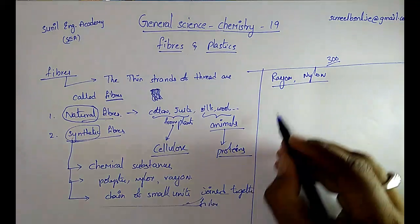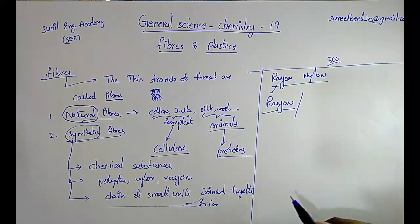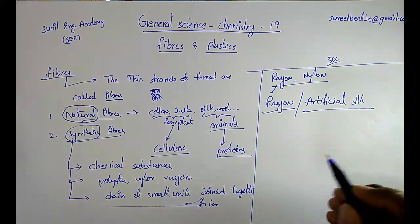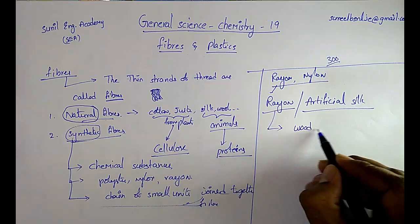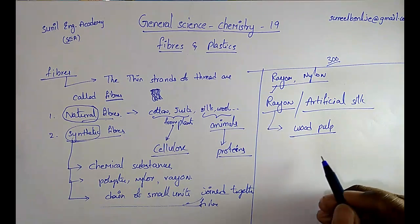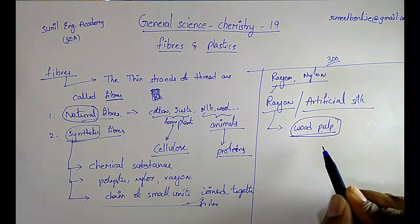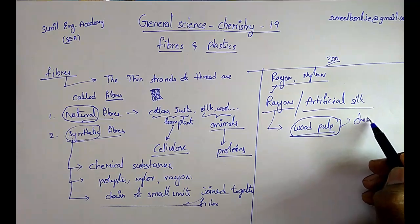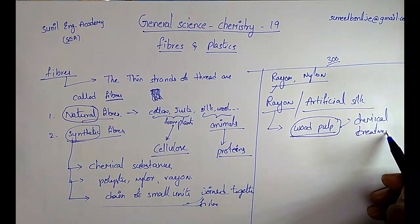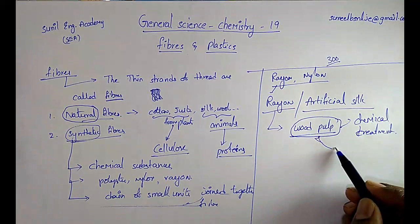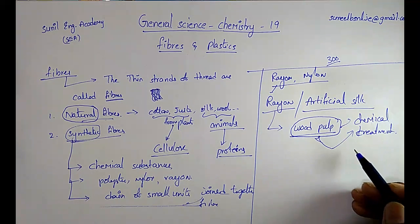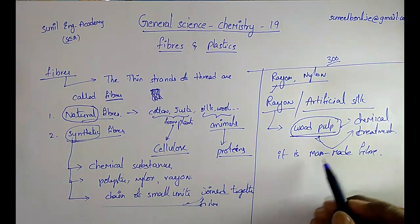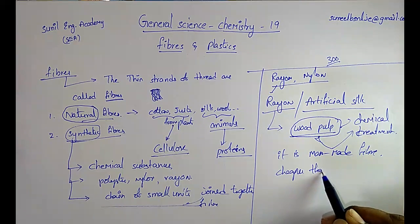The first example of synthetic fiber is rayon. We may also call rayon artificial silk. It is obtained by chemical treatment of wood pulp. Although wood pulp is a natural source, there is involvement of chemical treatment, so it is considered a man-made fiber. It is also cheaper than silk.